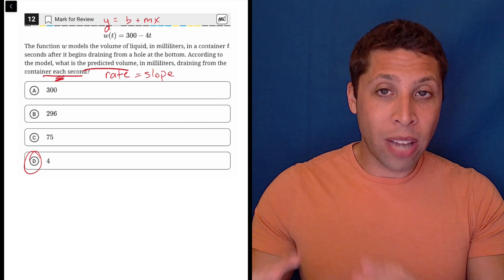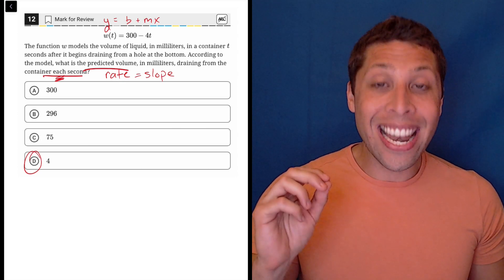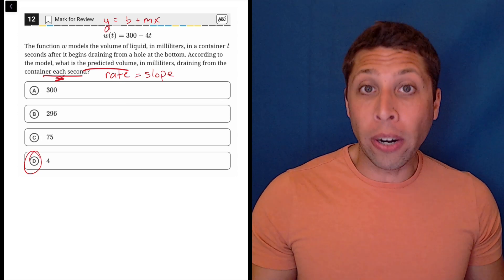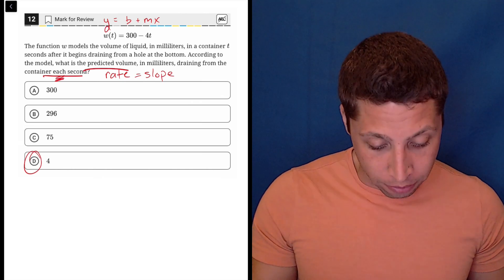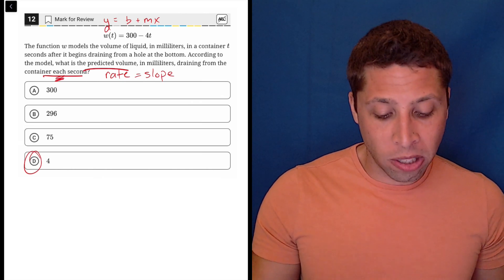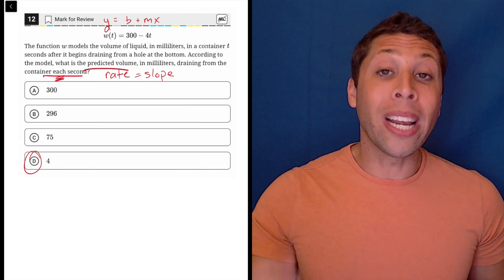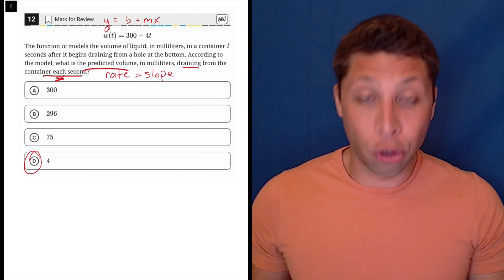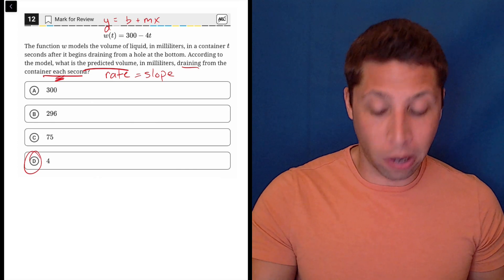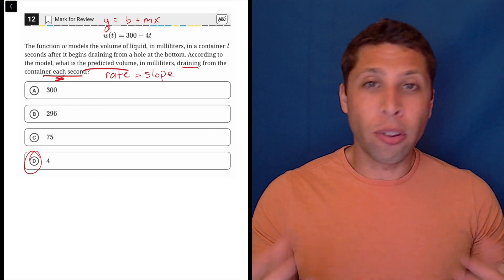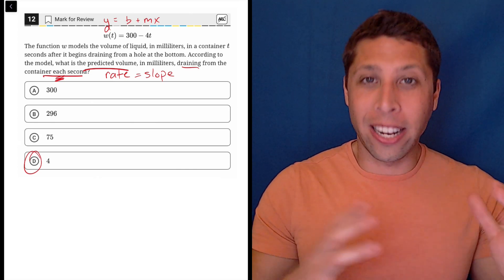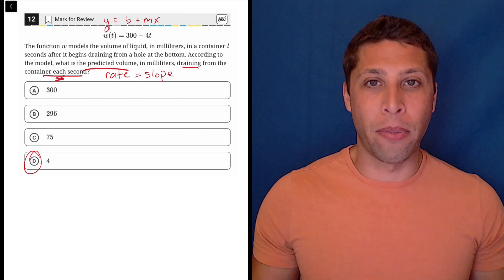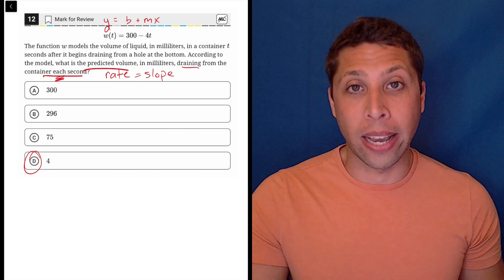Now, I know that there's a negative, and so technically, the slope of this thing is negative 4, but they do phrase the question in a way that lets us drop the negative, right? According to the model, what is the predicted volume in milliliters draining from the container each second? So the negative is kind of built into that word draining, right? It's losing 4 milliliters. And so they're not really asking for the sign of the thing. They're just asking what is the volume? So that lets us drop the negative.